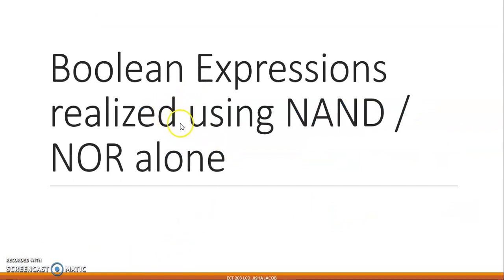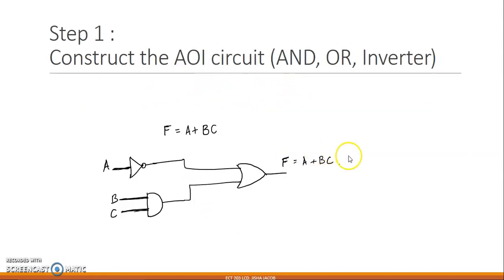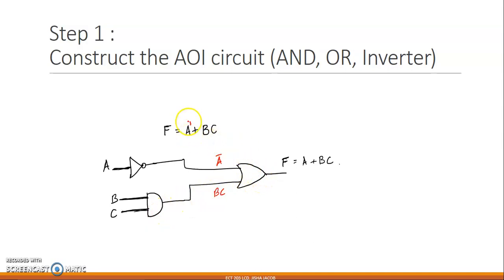Today we are going to study how to draw the circuit of a boolean expression using just NAND gates alone or NOR gates alone. Given the function F = a̅ + bc, the first step is to construct the AOI circuit using AND gates, OR gates, and inverters: pass A through an inverter to get A̅, pass B and C through an AND gate to get bc, then combine at an OR gate to get a̅ + bc.